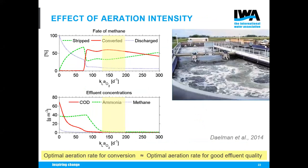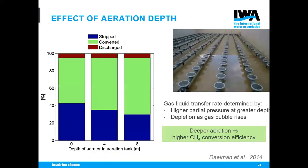We then investigated the effect of aeration intensity. The optimal aeration intensity for methane conversion corresponds with that needed for ensuring good effluent quality in terms of COD and ammonium — very good news. A small fraction of aeration air, about 3.5%, is used for methane conversion.